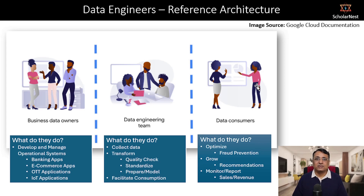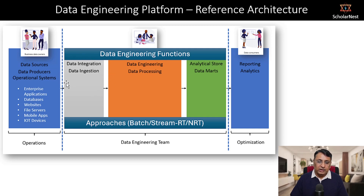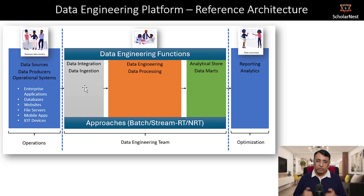How do we do it? What are the different functions of data engineering? If we classify data engineering projects into smaller functions, we can broadly categorize them into three. The first function is data integration or data ingestion — we collect data from source systems because the data is with the data owners. The first activity of any data engineering project is to collect data from sources and bring it into the data engineering team's possession.